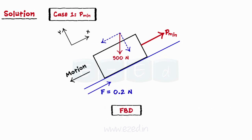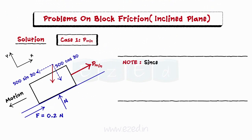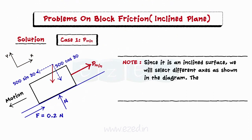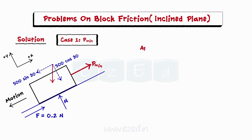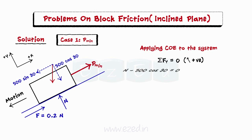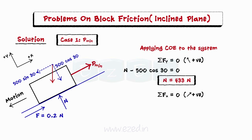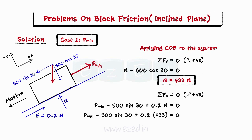Let us now draw the free body diagram of the block. Kindly note that since it is an inclined surface, we will select different axes as shown in the diagram. The sign conventions are assigned according to the directions of the applied force. We will first equate the summation of all forces in the y direction to 0, finding the normal reaction N to be equal to 433 N. Then equating the summation of all forces in the x direction to 0 and substituting the values, we find P_min = 163.4 N.